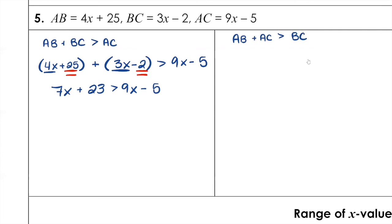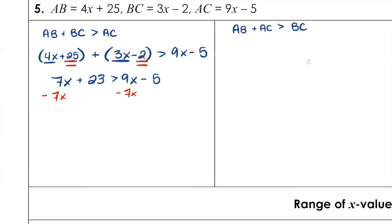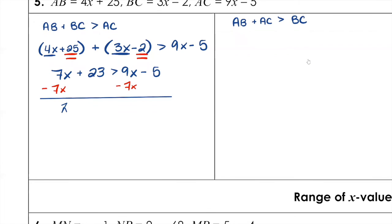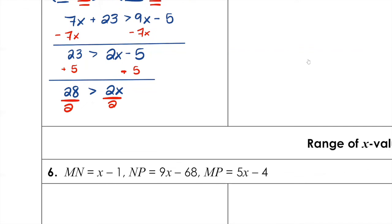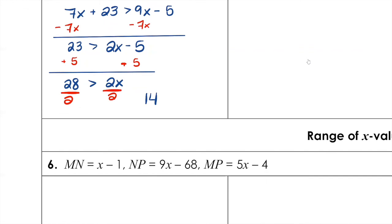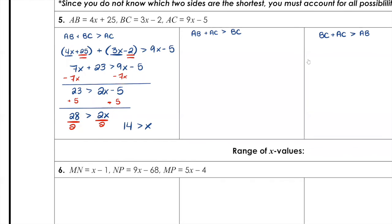To avoid the flipper, subtract 7x from both sides: 23 is greater than 2x minus 5. Add 5: 28 is greater than 2x. Divide by 2: x must be less than 14. That's our upper bound.